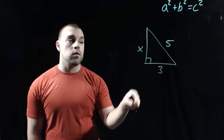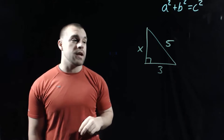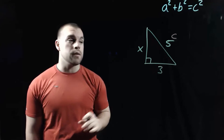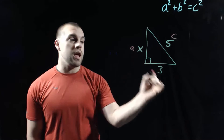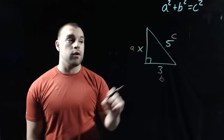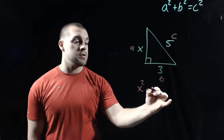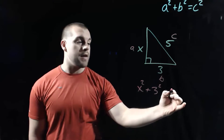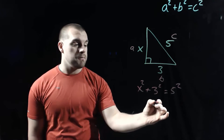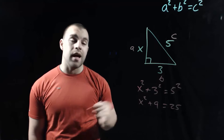In this example, we're given another right triangle with a side missing. We're going to use the Pythagorean Theorem to find the length of that missing side. The hypotenuse across from the right angle always has to be our C. I'm going to call the missing leg A and the known leg B. Plugging into the Pythagorean Theorem, we've got X squared plus 3 squared equals 5 squared. Simplifying: 3 squared is 9 and 5 squared is 25, and X squared stays as X squared.